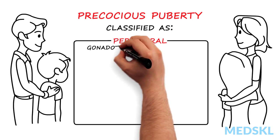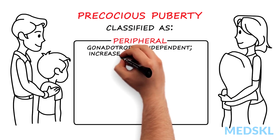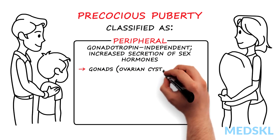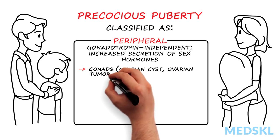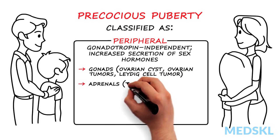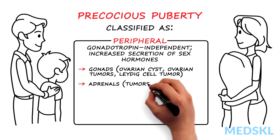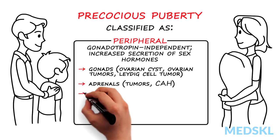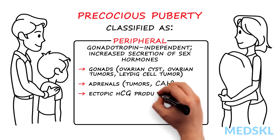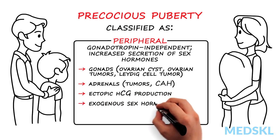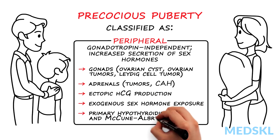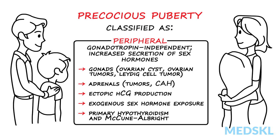Peripheral precocious puberty is gonadotropin independent and stems from increased secretion of sex hormones. This can occur from the gonads — for example, ovarian cysts, ovarian tumors, or Leydig cell tumor of the testes — from the adrenals, for example tumors or untreated congenital adrenal hyperplasia, ectopic human chorionic gonadotropin production by a germ cell tumor, or exogenous sex hormone exposure. Primary hypothyroidism and McCune-Albright syndrome are also causes of peripheral precocious puberty.